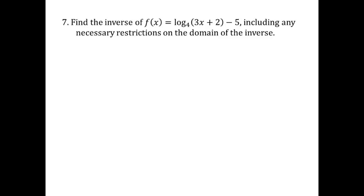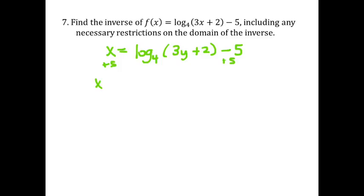So let's get to finding the inverse. I'm going to rewrite the function switching x and y. So x is equal to log base 4 of 3y plus 2, and there's also a minus 5 there. Alright, so we need to solve for y. First thing I'm going to do is add that 5 to both sides, so I have x plus 5 is equal to log base 4 of 3y plus 2.